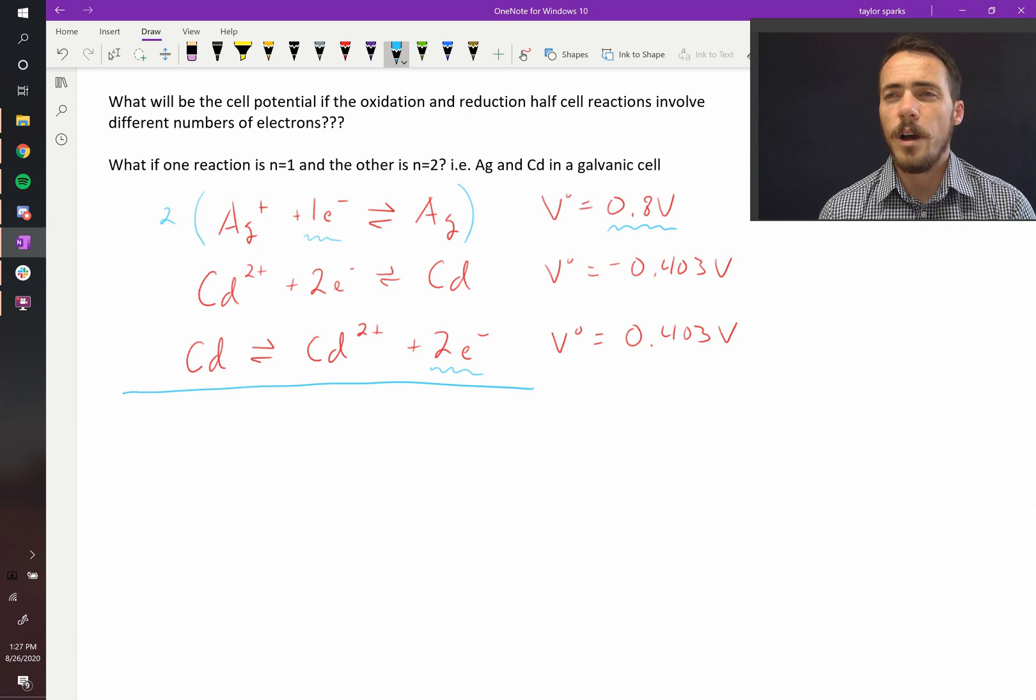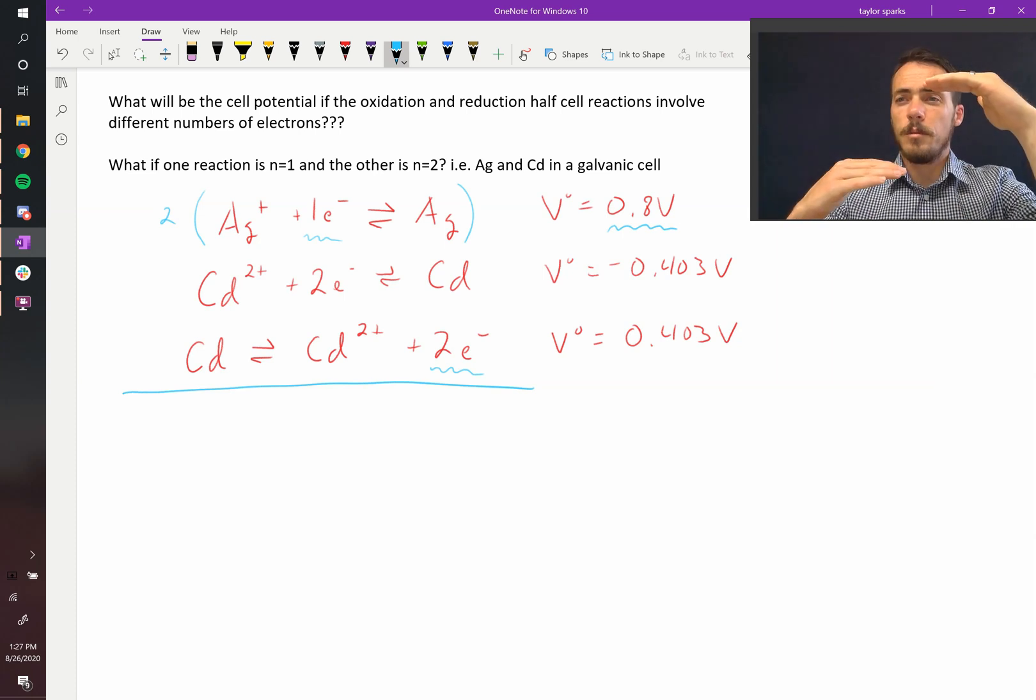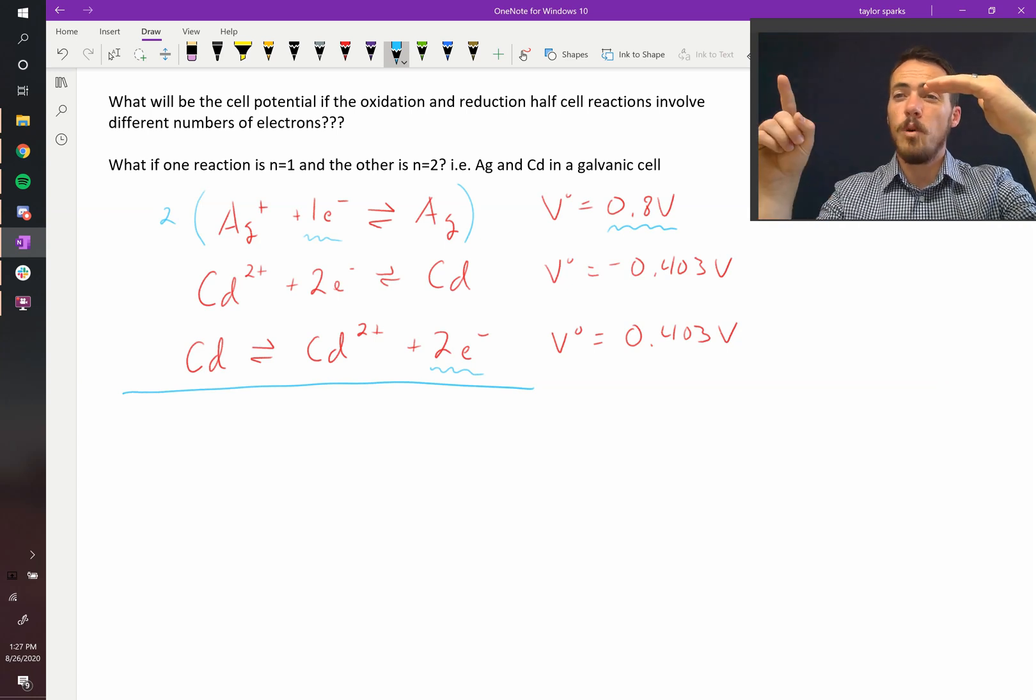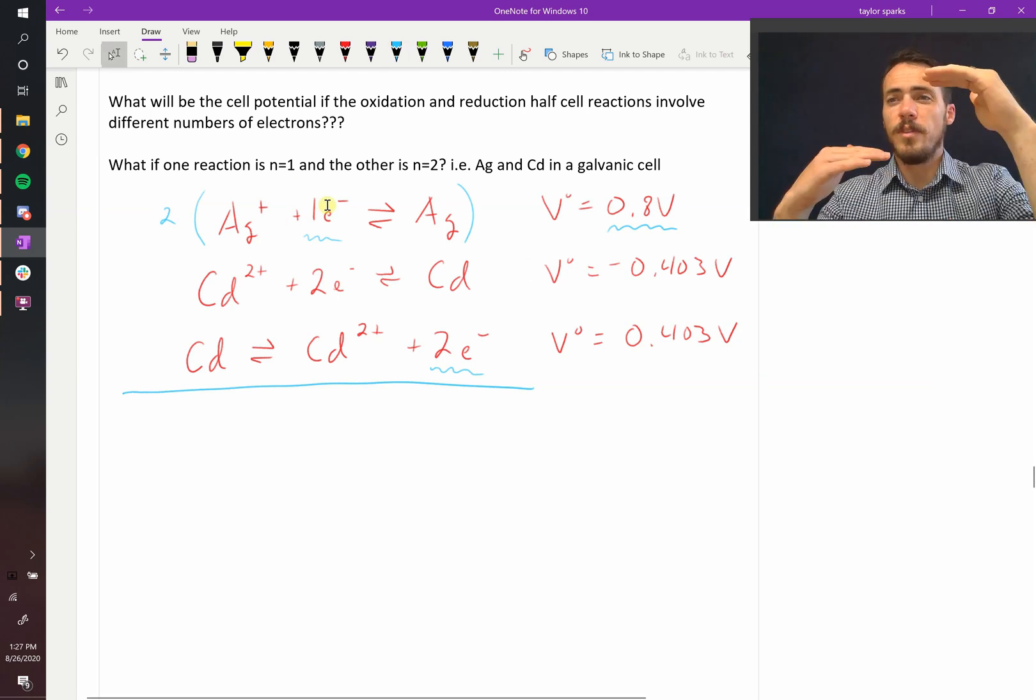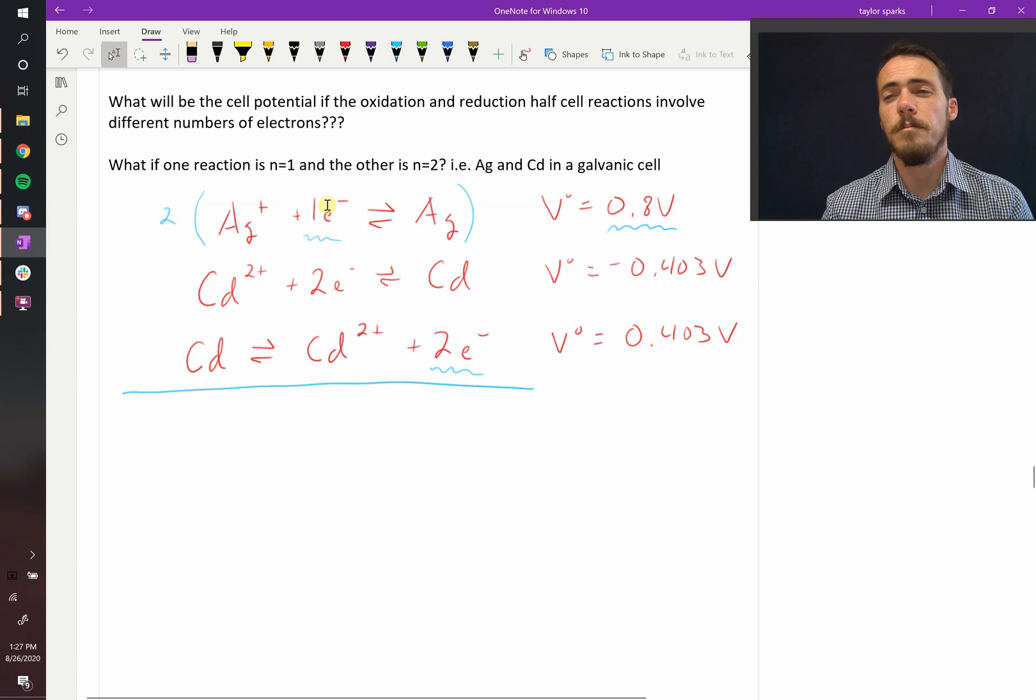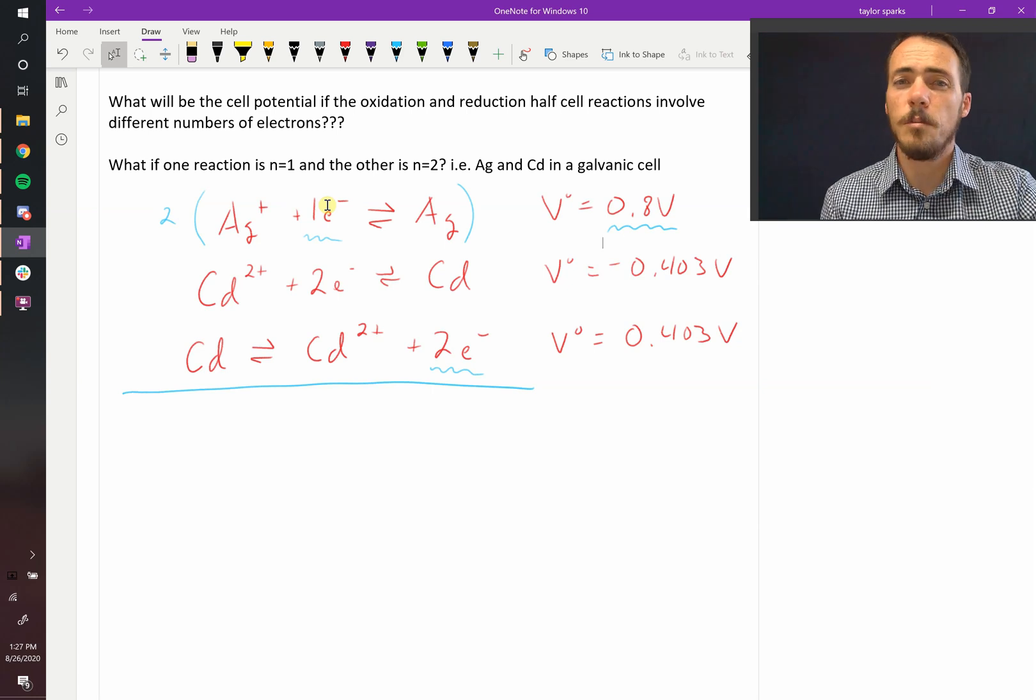The reason why is we often think of voltage as a potential difference. So think of like a waterfall. The energy of that waterfall is like the height from the top to the bottom that it falls. So if you're doing two electrons in this reaction, you aren't changing the overall height of the waterfall. You're changing the amount of water flowing off of the waterfall. So the current has increased with more electrons, but the potential difference is the same. So that's just something you have to remember.